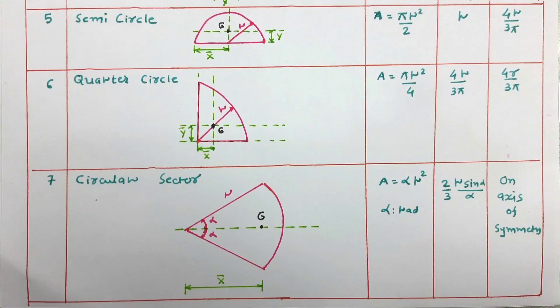We have seen how to determine the position of the centroid, that is x-bar and y-bar, for common two-dimensional figures. You have to remember all the area formulas and centroidal distances for these shapes. Thank you for watching this video. If you have any doubt or query, please write in the comment box.